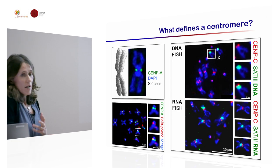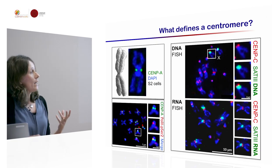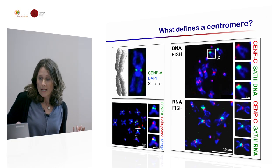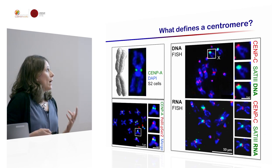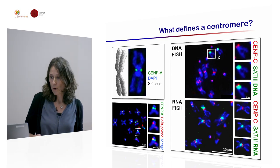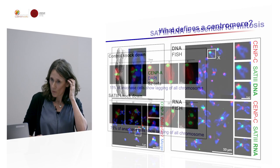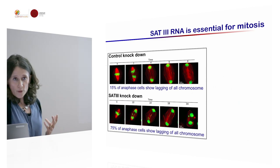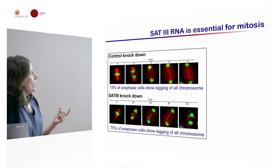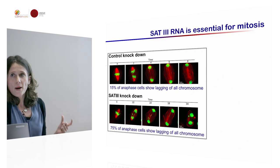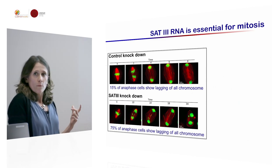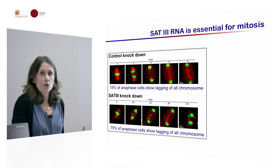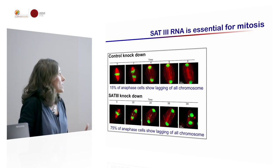Here you see an RNA FISH, and these transcripts localize to mitotic chromosomes in trans — at different loci, but at the same loci on mitotic chromosomes. We went on and showed that those repetitive regions are not only transcribed, but the transcripts themselves also have a function.